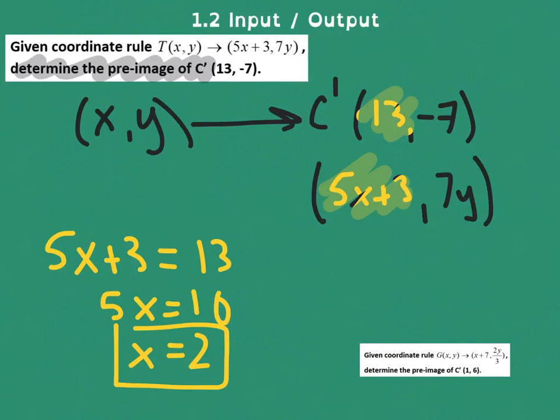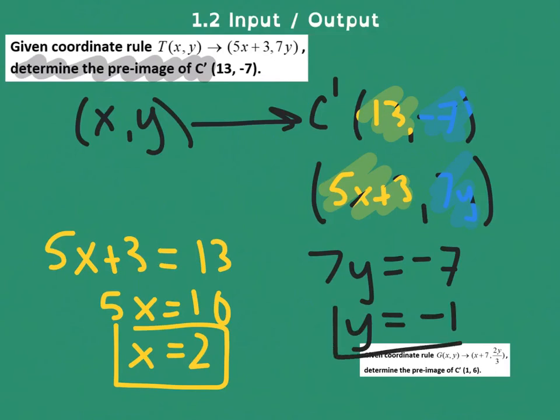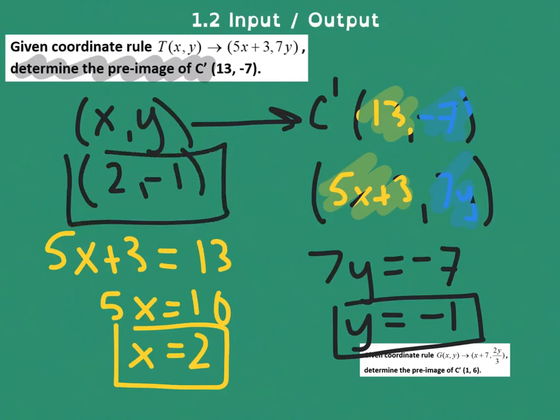In a similar way, if I see that this is negative 7 and this is 7y, then I could just say 7y became negative 7. y equals negative 1. And I have found my two values that were the original points, the pre-image. So in this case we went from output and we obtained the input.